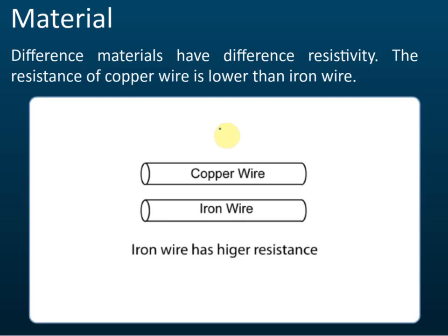The last factor is the material of the resistor. Different materials have different resistivity. In SPM exams, you are usually asked to compare the resistivity of copper wire and iron wire, so you don't need to know the resistivity of all materials — just remember the resistivities of copper and iron. You don't need to know the exact values; you just need to know which one is higher.